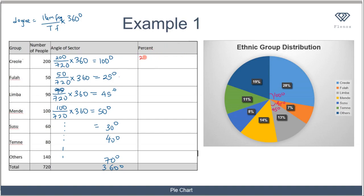Here we have 200 over 720 times 100, which gives us 28%. For the next one, we have 50 over 720 times 100, which gives us 7%. If you apply the principle for the rest, you have 13%, 14%, 8%, 11%, and 19%.